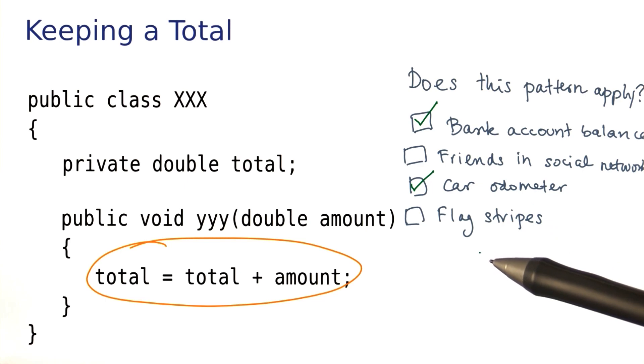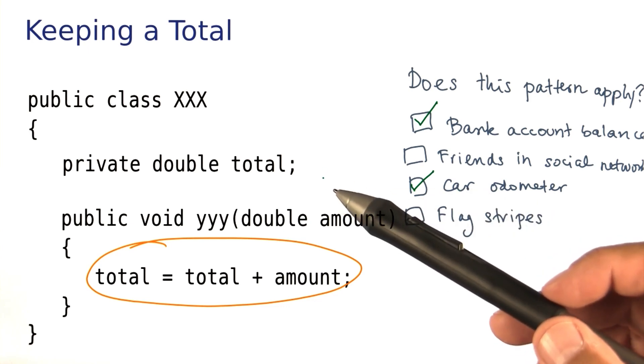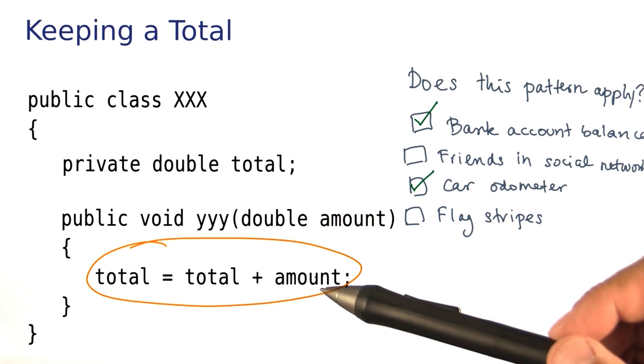And finally, what about flag stripes? I don't know. If a flag has a constant number of stripes, they don't change. So even though you may want to count the stripes, it's not the total pattern where you have a quantity that has some method that adds to it, and maybe some method that subtracts from it.